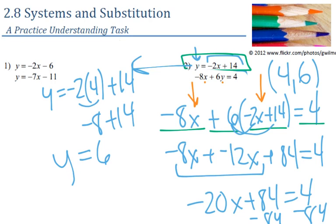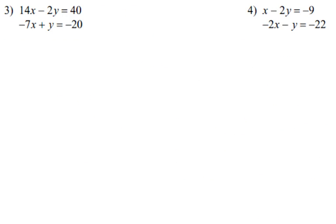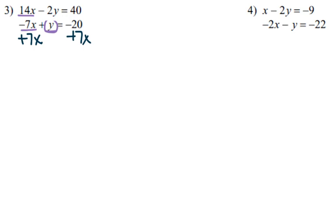Substitution is just another way, besides graphing, to figure out what's going on with a system. Sometimes you'll have equations where there's no variable already by itself. Looking at number 3, I need to get one of the variables all by themselves. My suggestion: pick the easiest one — the one without a coefficient, or the one with the smallest coefficient. The bottom equation seems easiest.